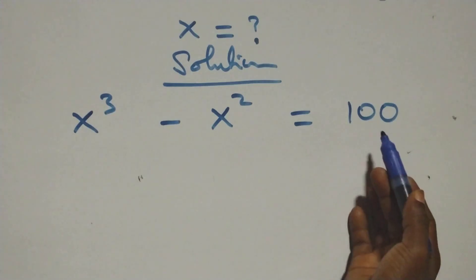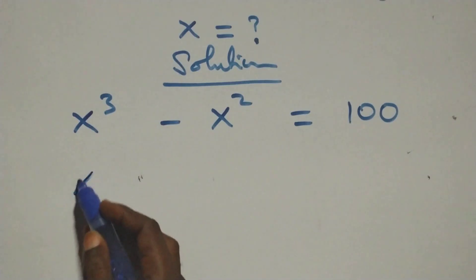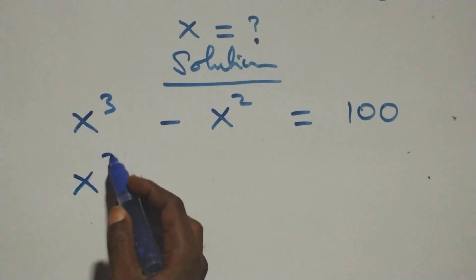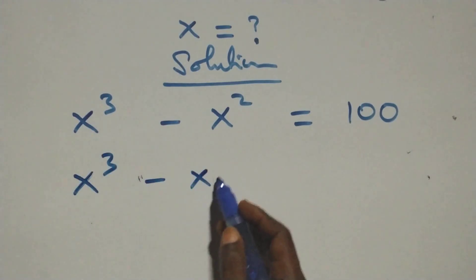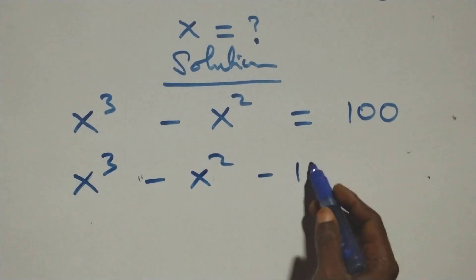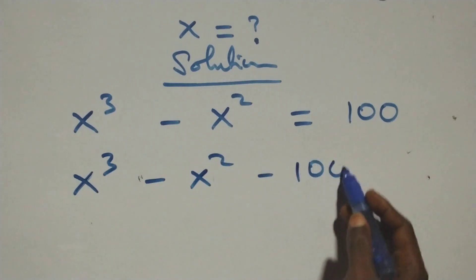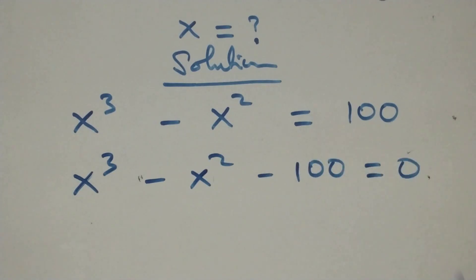Next step here, we take undrained to the left hand side and we have x raised to power 3 minus x squared, then minus undrained equals to 0 here.